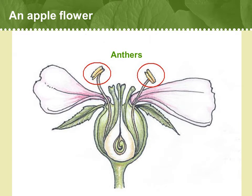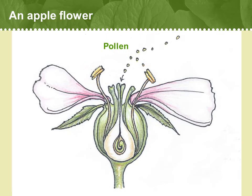Here's where the pollen comes in. The circles highlight the yellow anthers, which are structures that bear pollen. Pollen contains the sperm, which carry the male genes of the plant. When the pollen is mature, the anthers release it.